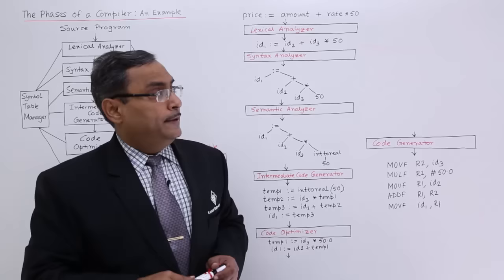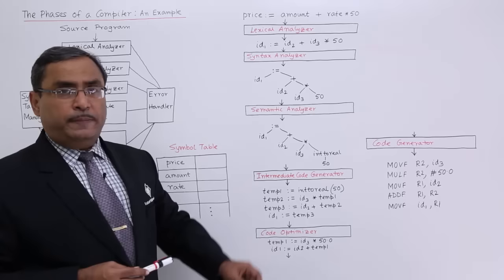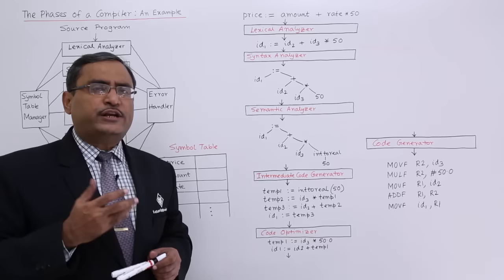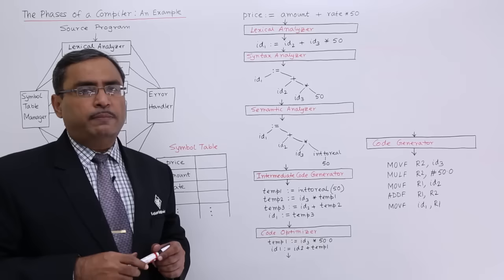Let us suppose there is one high-level language statement: price := amount + rate * 50. Let us suppose price, amount, and rate are of type real, meaning they can have a fractional part, and 50 is purely an integer. Keep this in mind as we will be taking care of that issue.